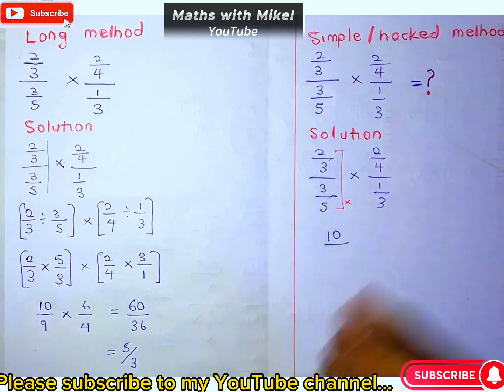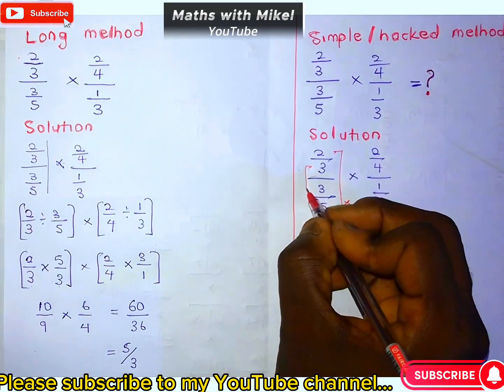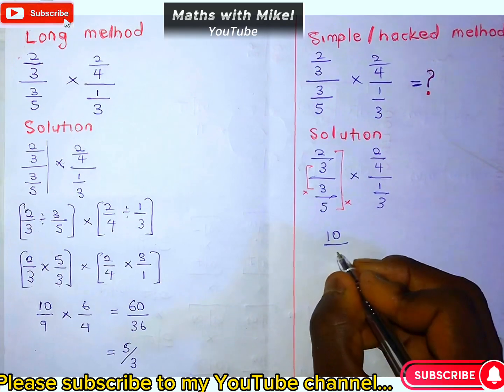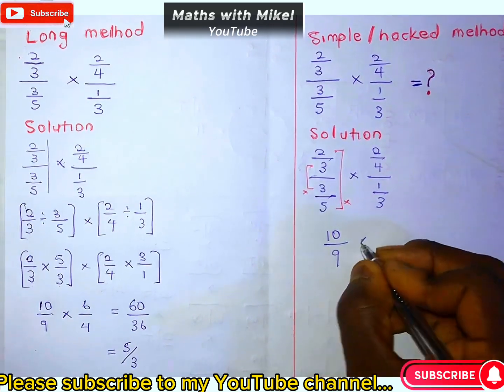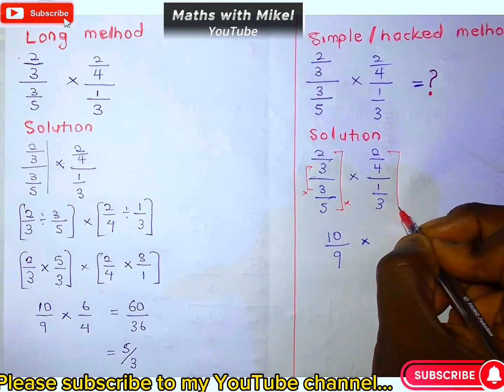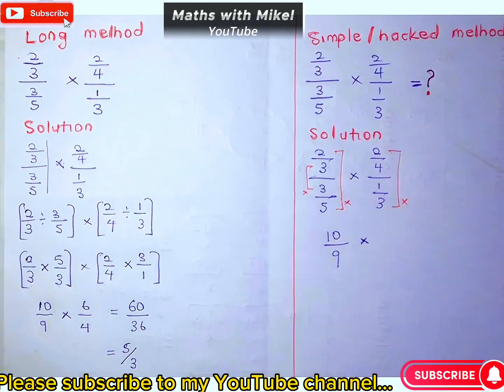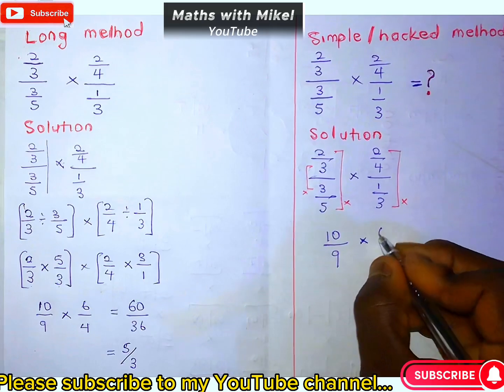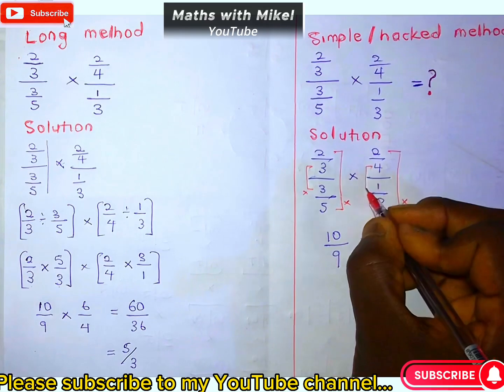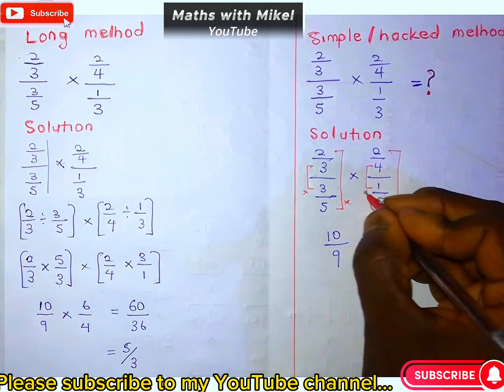Divided by the two middle numbers multiplied together—that's 3 times 3, which equals 9. Then for the second fraction, 2 times 3, divided by 4 times 1.